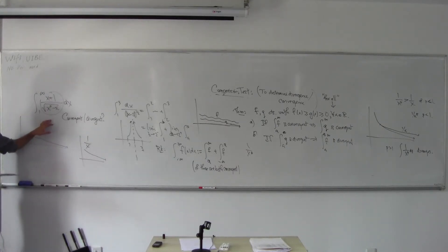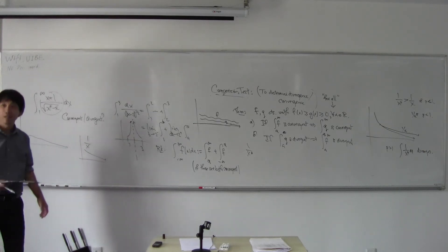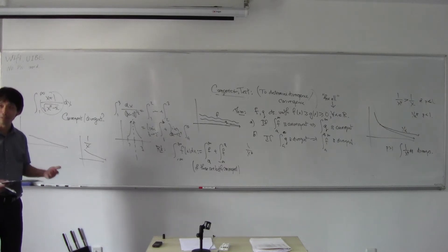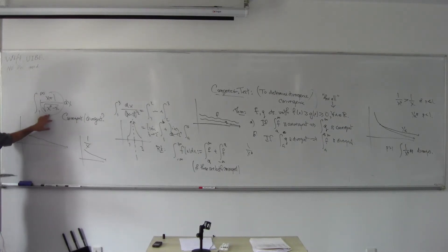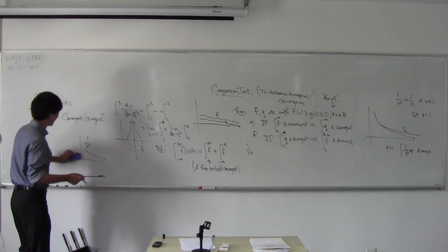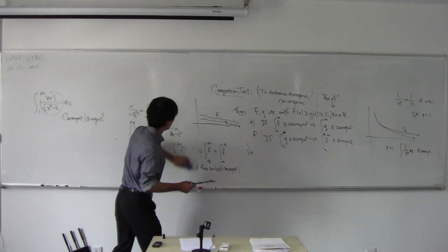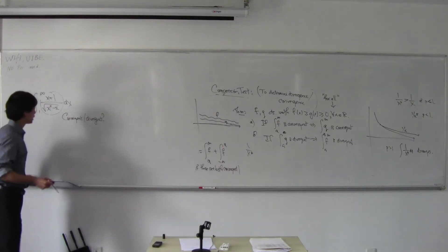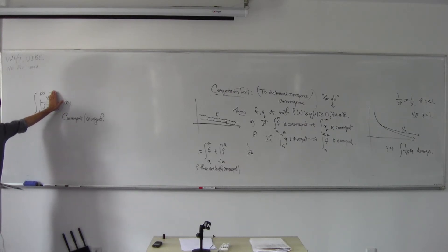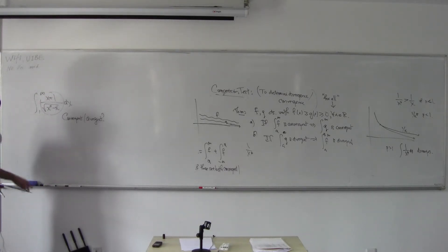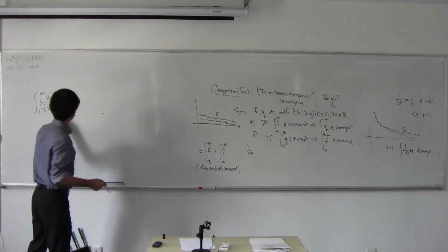It sounds like 1/x — it's just like 1/x. And 1/x is divergent. That's actually the answer — it's divergent. You can sort of see that by thinking: this 1 doesn't really matter that much, this x doesn't really matter that much, so this thing is basically x over x², which is 1/x, and 1/x is divergent.